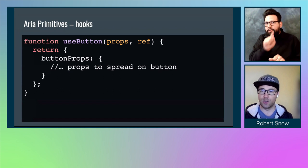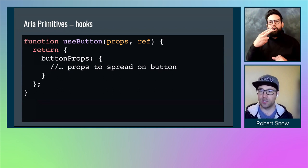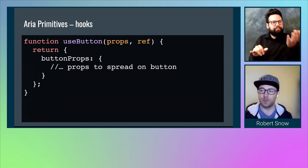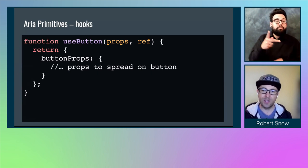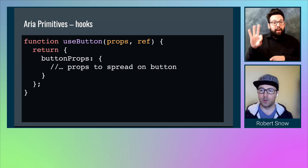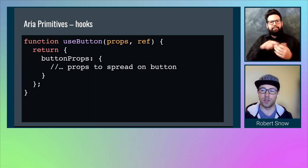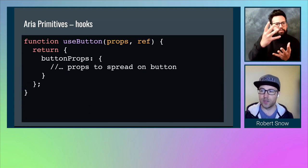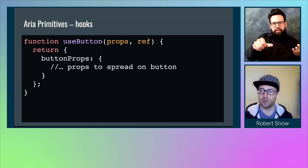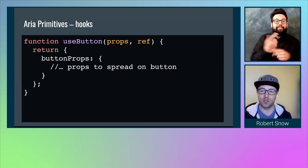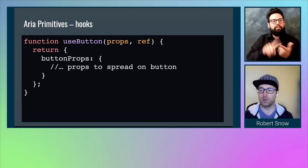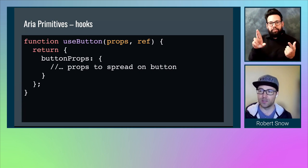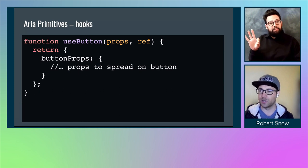So what does one of these hooks actually look like? Here's the definition of useButton. It takes props and a ref, and it returns button props. Props accepts a variety of information or configuration about your button — from typical event handlers like onKeyDown and press handlers, to various attributes such as whether it is disabled, to ARIA attributes such as aria-label.